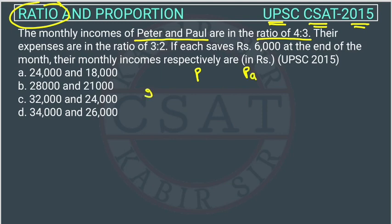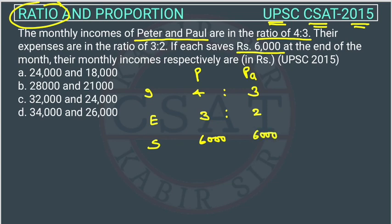Their income is in the ratio of 4 is to 3, and their expenses are in the ratio of 3 is to 2. If each saves rupees 6000 — so Peter is saving 6000 and Paul is also saving 6000 rupees at the end of the month — we need to find their monthly incomes respectively.